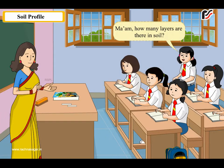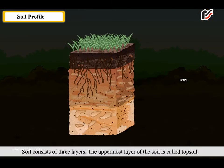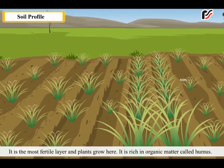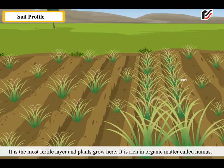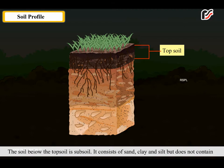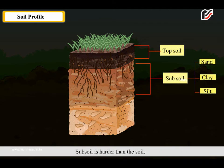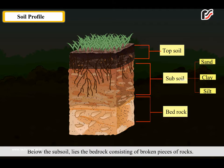Ma'am, how many layers are there in soil? Soil consists of three layers. The uppermost layer of the soil is called topsoil. It is the most fertile layer and plants grow here. It is rich in organic matter called humus. The soil below the topsoil is subsoil. It consists of sand, clay and silt but does not contain organic matter and humus. Subsoil is harder than the topsoil. Below the subsoil lies the bedrock, consisting of broken pieces of rocks.